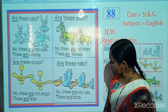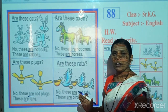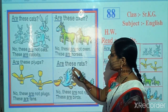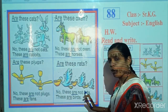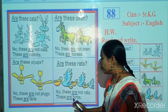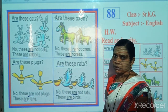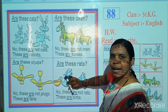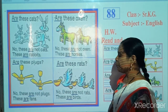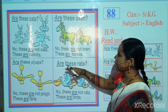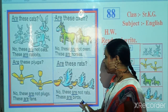Now look here. This is a picture of birds. Now read this question: Are these rats? No, these are not rats. These are birds. But here is a picture of birds and the question is different — Are these rats? So we will reply: No, these are not rats. These are birds.